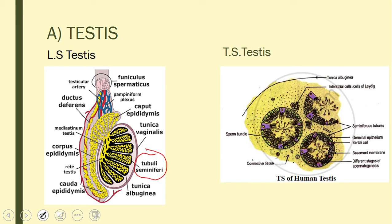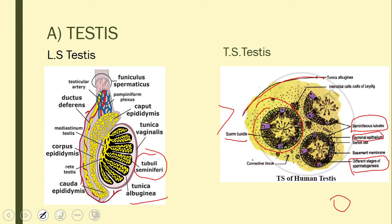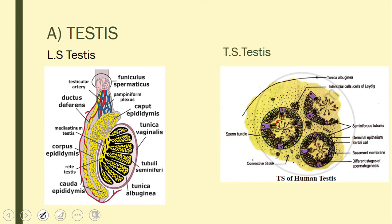In transverse section, you can see the tunica albuginea surrounding the seminiferous tubules. The seminiferous tubules have an outermost lining of germinal epithelium — the cells that give rise to sperms through spermatogenesis. The stages include primary spermatocyte, secondary spermatocyte, spermatozoa, and finally sperms. Between the sperms are purple-colored supporting cells called Sertoli cells, which help in nourishment of the sperms.